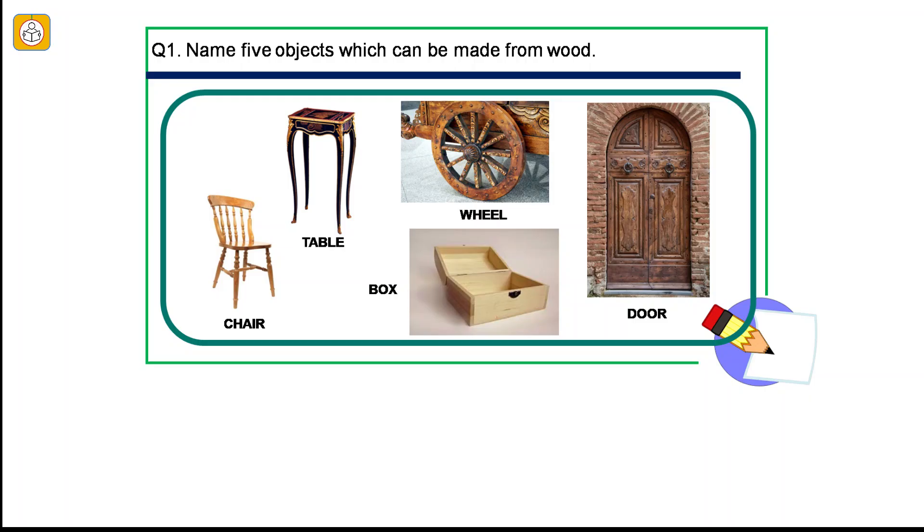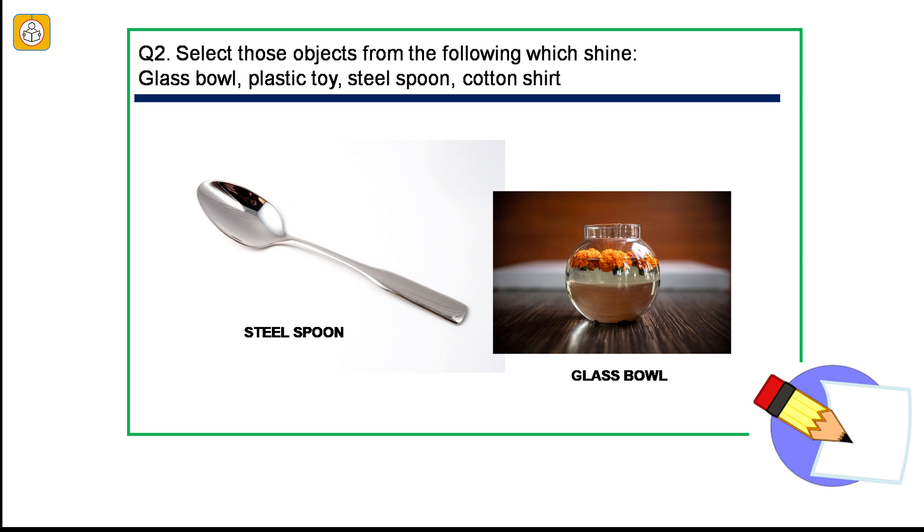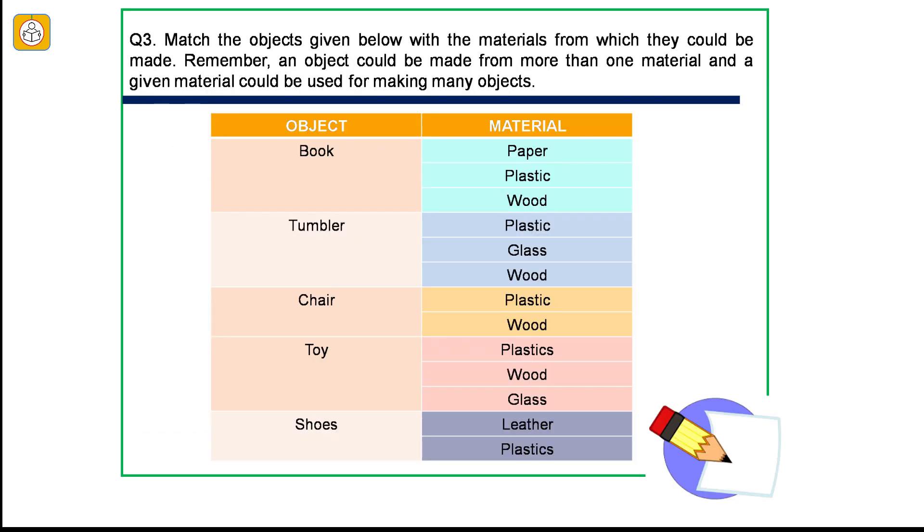Question number 1: Name five objects which can be made from wood. The answer is chair, table, box, door and wheel. Question number 2: Select those objects from the following which shine. Glass bowl, plastic toy, steel spoon, cotton shirt. The answer is steel spoon and glass bowl. Question number 3: Match the objects given below with the materials from which they could be made. Remember, an object could be made from more than one material and a given material could be used for making many objects. Book - a book is essentially made up of paper. But its cover can also be made up of plastic, leather or wood. A tumbler is usually made up of plastic or glass. It can also be made up of wood. Chair is usually made up of wood and plastic. Toy is usually made up of wood or plastic. It can also be made up of paper or glass.